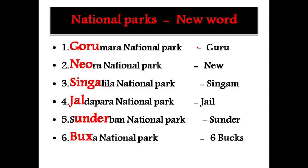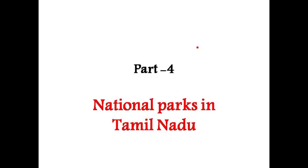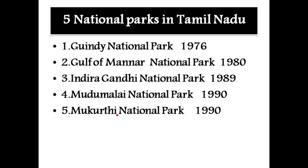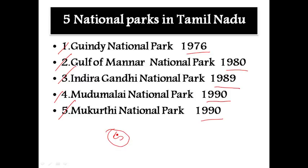Previously I covered Part 2. Today we are going to see Part 3: Tricks to Remember National Parks in Tamil Nadu. In Tamil Nadu, there are five important national parks. They are: Gundi National Park, established in 1976; Gulf of Manar National Park, established in 1980; Indira Gandhi National Park, established in 1989; Mudumalai National Park, established in 1990; and Mukurti National Park, established in 1990. Our target is to remember all five names.